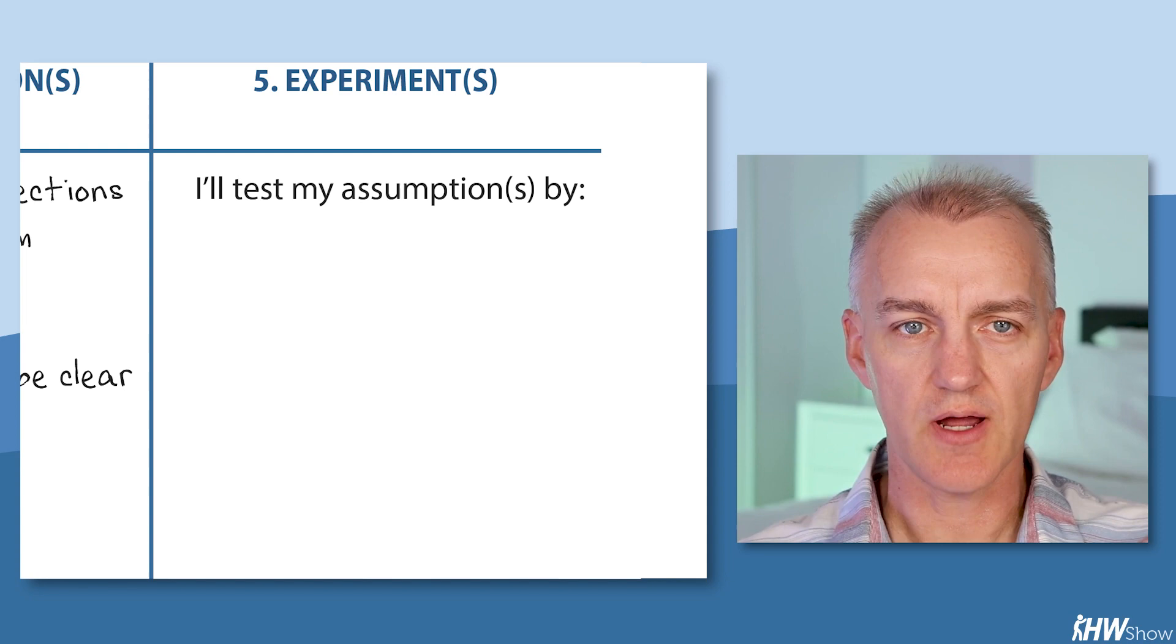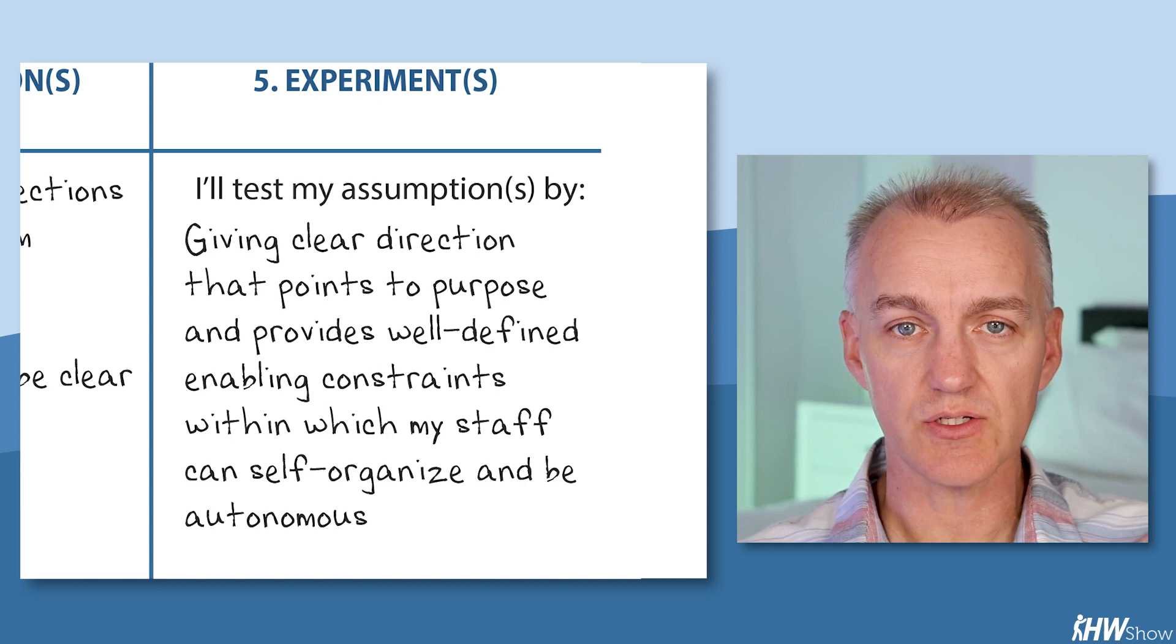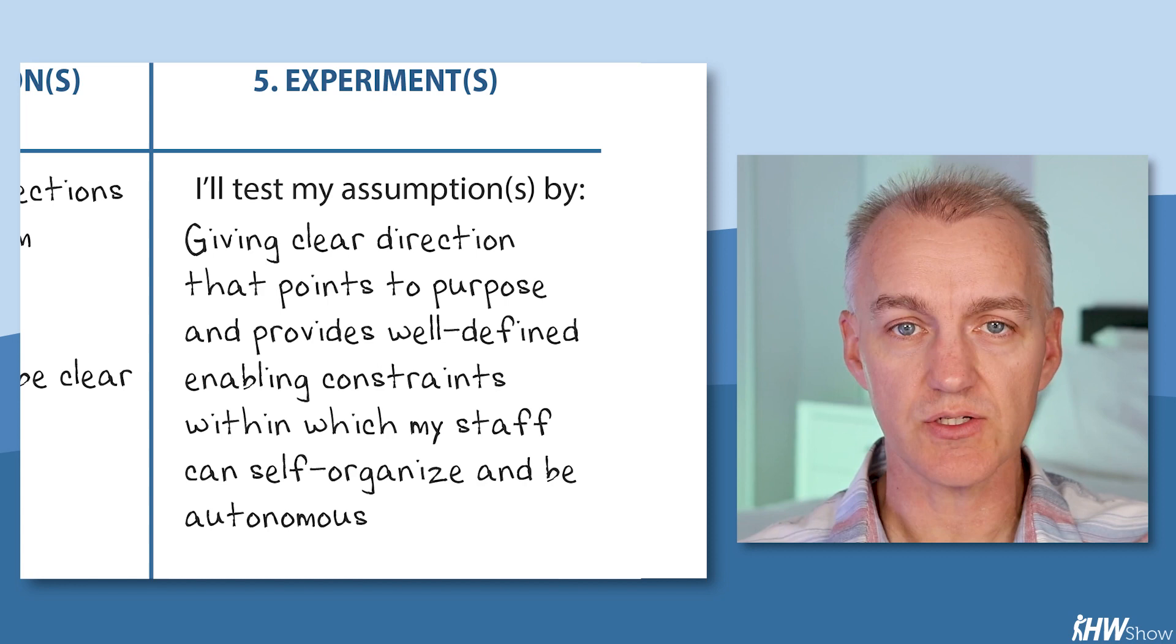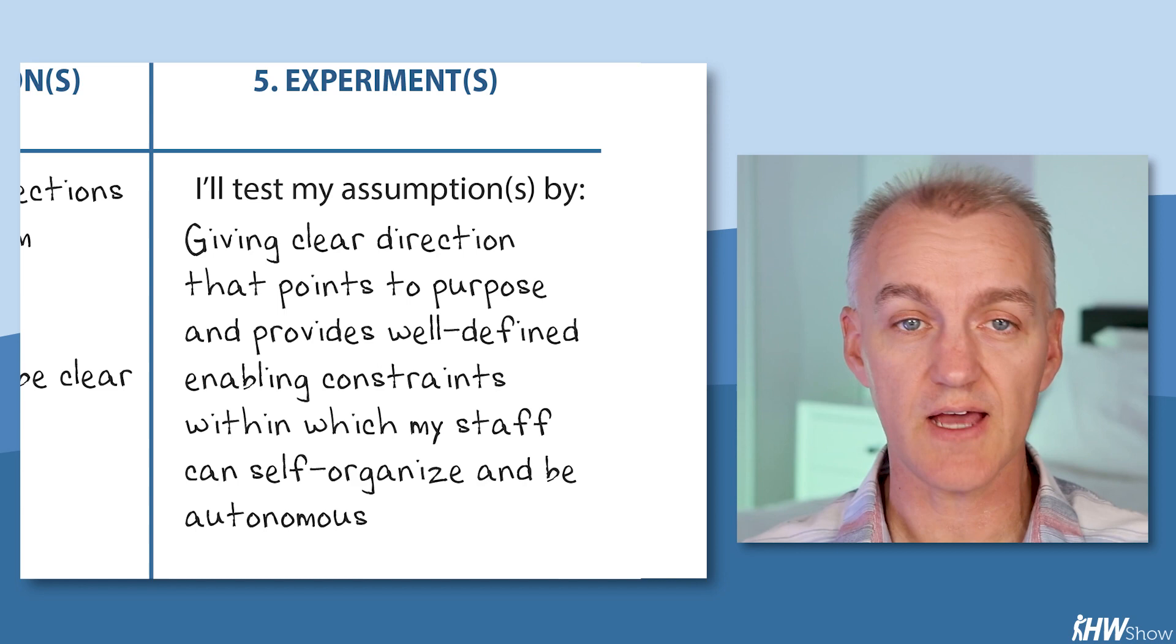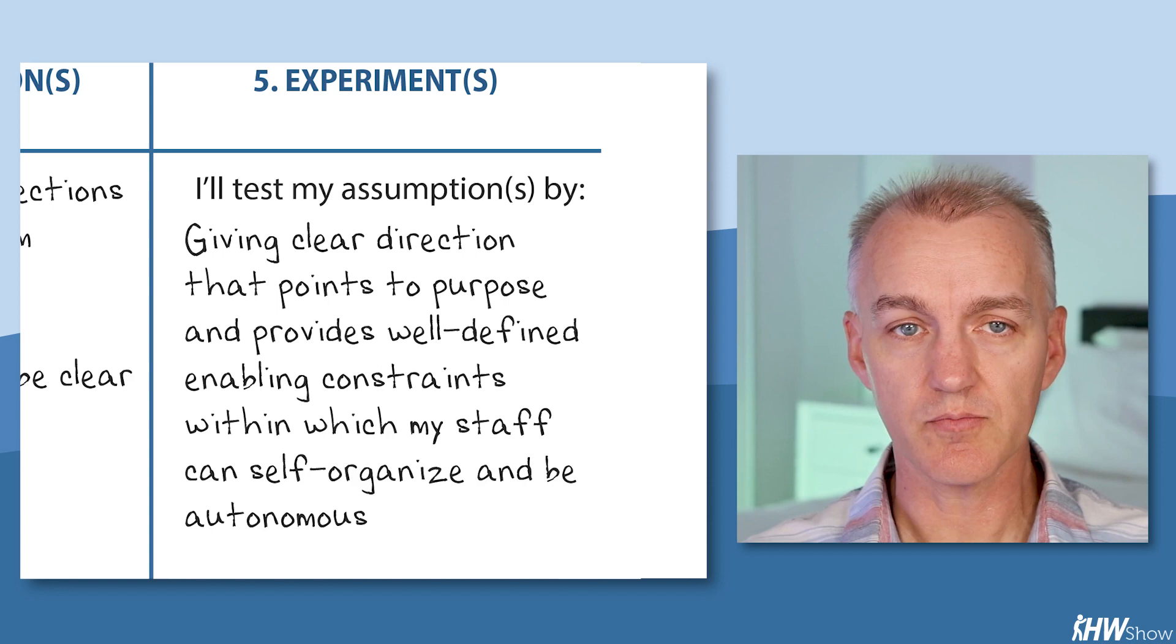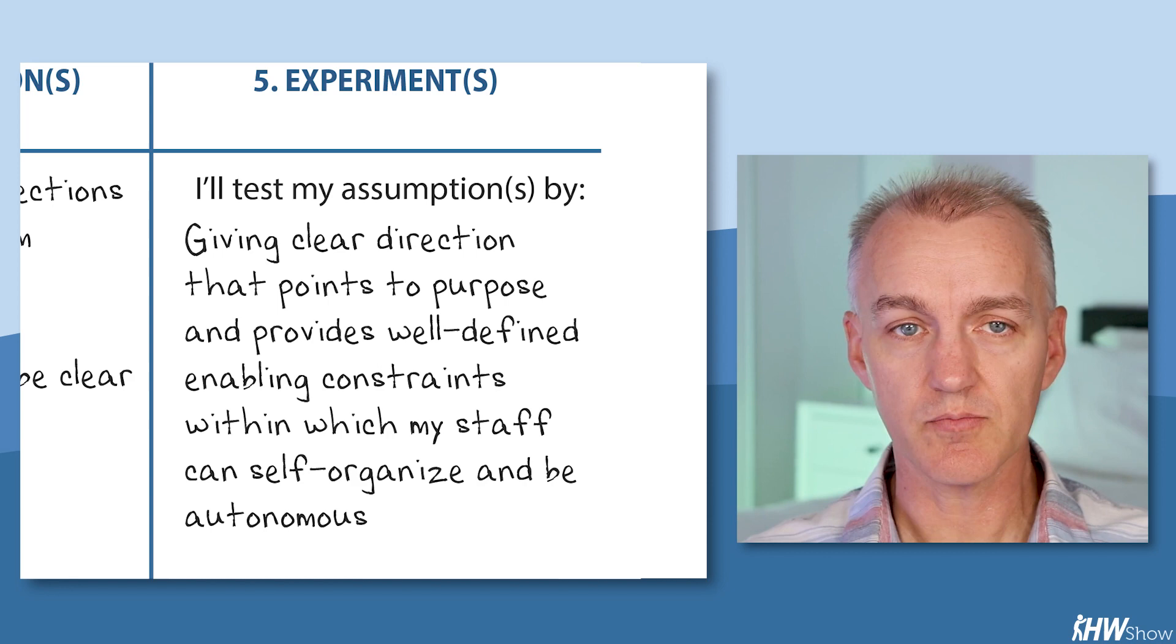Finally, column five is what experiments can we try to test those assumptions? And here it was practice giving clear direction that points to purpose and provides well-defined enabling constraints within which my staff can self-organize and be autonomous. This leader needed to see a bunch of examples of clear direction without micromanagement, so we coached them through that experiment. Part of this was skill building, but a big part of it was just falsifying the assumption that clarity necessarily equals controlling.